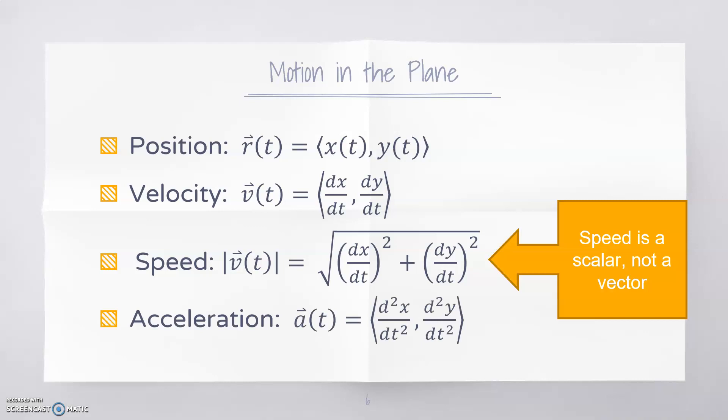Acceleration has vector properties. It is the second derivative with respect to time of both x and y components of your position vector.